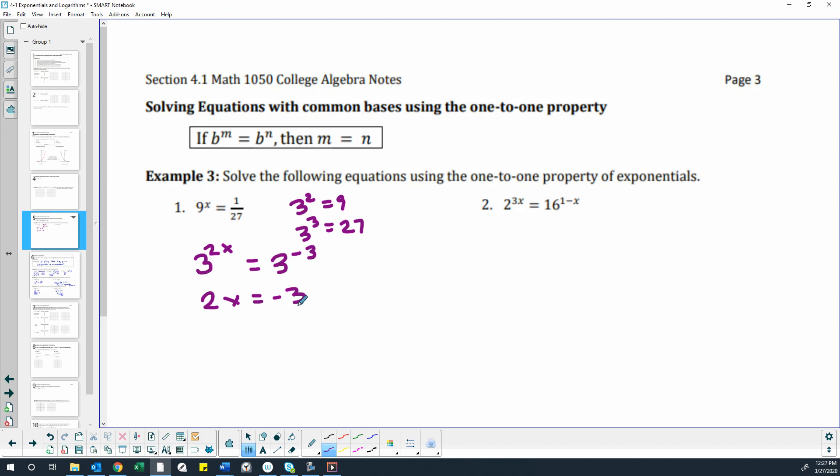So if 2x equals negative 3, then x equals negative 3 halves, or we could do that as a decimal: negative 1.5. That's the solution to our equation.